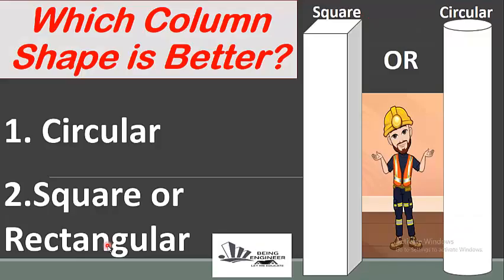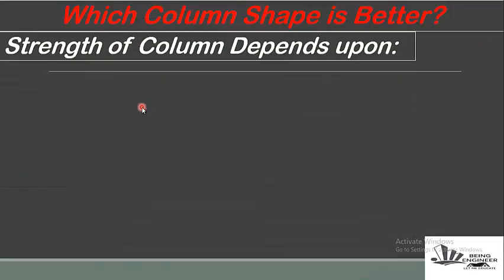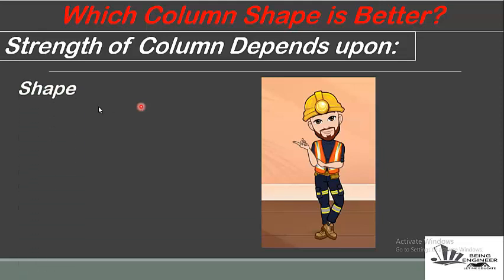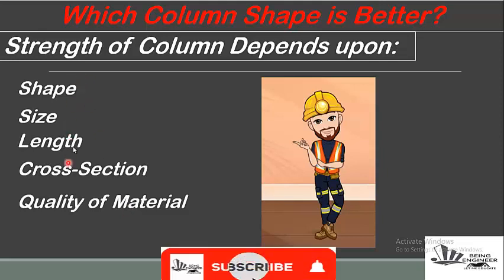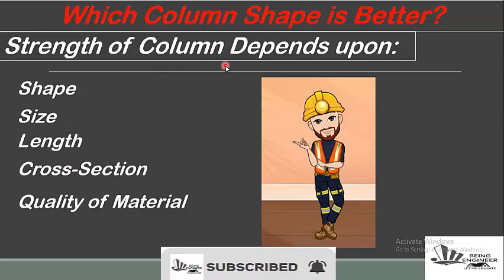One thing of much concern about the shape of column is strength. The strength of the column depends upon its shape, size, length, and cross-sectional area. But don't forget the most important point: the quality of the material, which plays a vital role in the strength of the column.